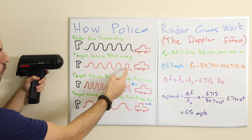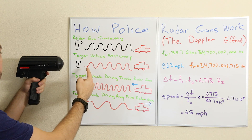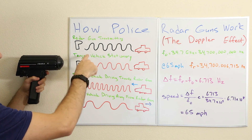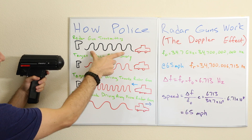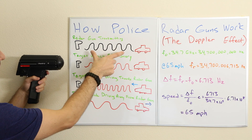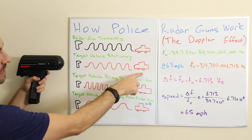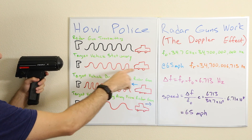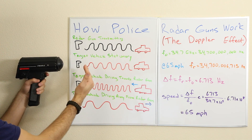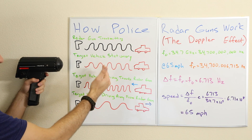This red frequency is the reflected frequency. You'll notice that the frequency — how many cycles per second — is identical to the signal that's being transmitted, because our car here is stationary. So the car is not moving, and the frequency of the reflected signal is the same.